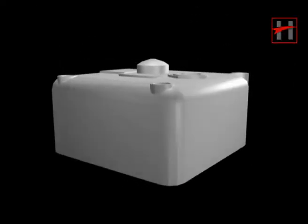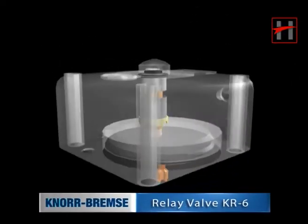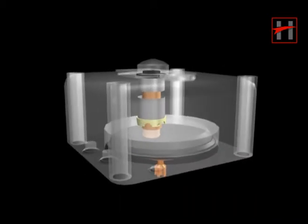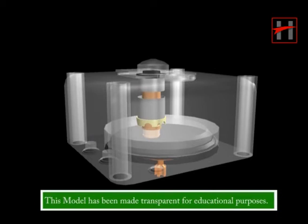This is a three-dimensional model of Knorr-Bremse Relay Valve type KR-6. The function of the relay valve is to supply brake cylinder pressure to the brake caliper.